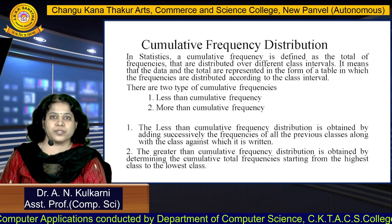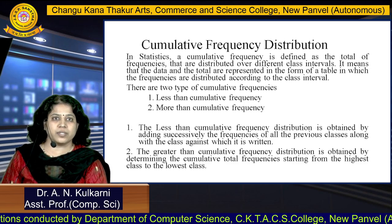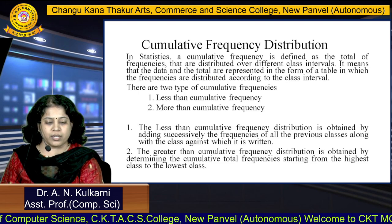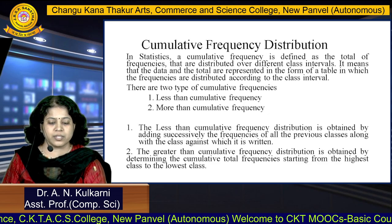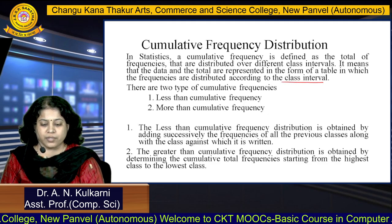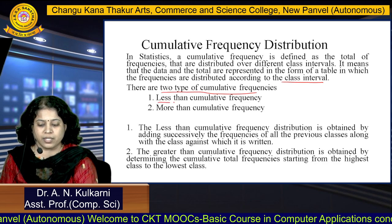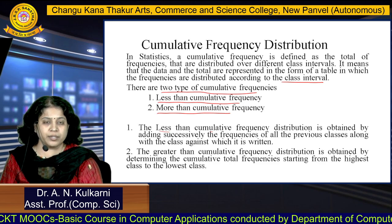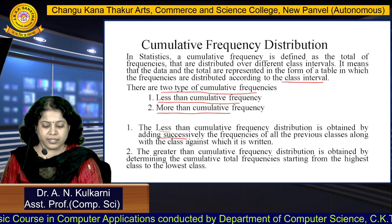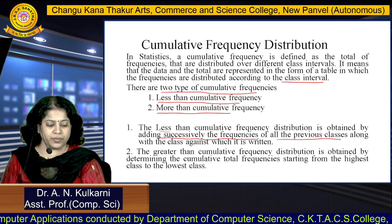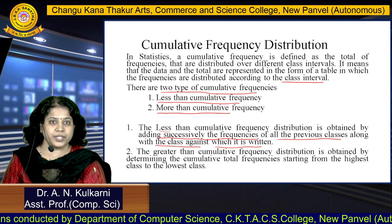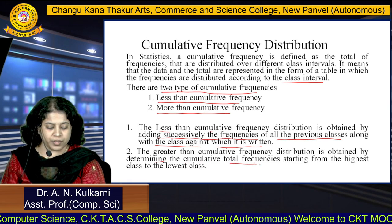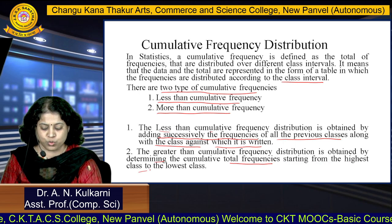Next point: cumulative frequency distribution. In statistics, a cumulative frequency is defined as the total number of frequencies distributed over different class intervals. There are two types: less than cumulative frequency, obtained by adding successively the frequency of all previous classes along with the current class; and more than cumulative frequency, obtained by determining cumulative total frequencies starting from the highest class to the lowest class.